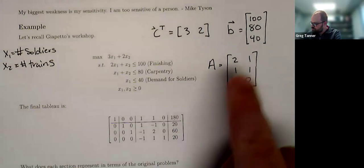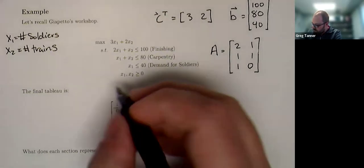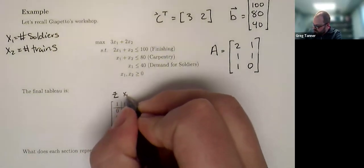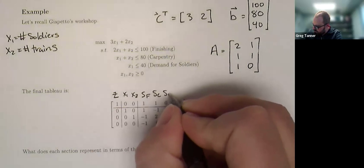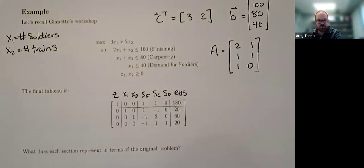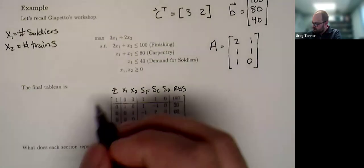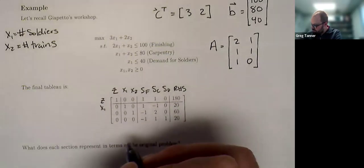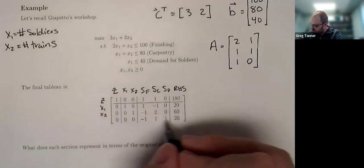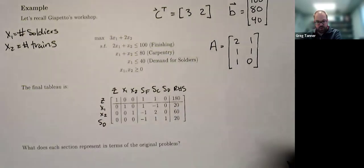So that's the starting values. Here's the final values of the final tableau. So labeling our columns here, we've got Z, X1, X2, Slack for finishing, Slack for carpentry, Slack for demand, and our right-hand side. And we can label our rows based off of our basis. So the objective row has Z. I've set this up so that X1 is the first row, X2 is the second row, and then I get the last standard basis vector with Slack for demand. Let's highlight the different parts of this.